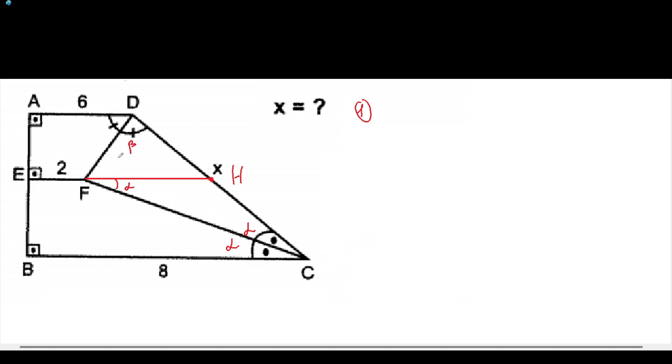And if this will be beta here, it will also be beta. And this will also be beta, which means that these three line segments will be equal to each other.